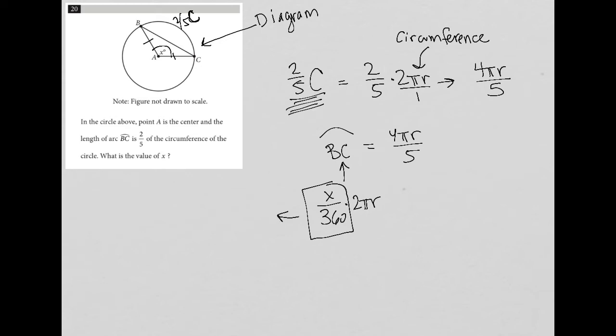So in essence, what I have here, and I'll just go to the left because I have more space, is two pi r X over 360 is equal to four pi r over five. And I need to simplify this. First, I can get rid of this two and make that 360 into 180. So now I have pi r X over 180 is equal to four pi r over five.